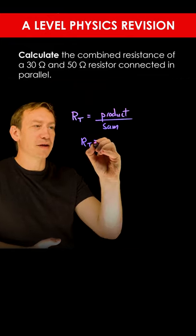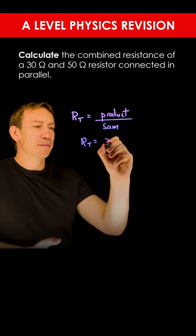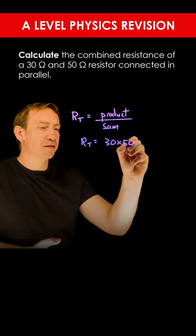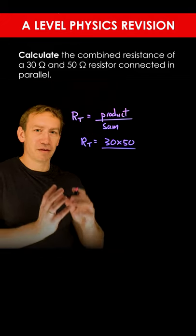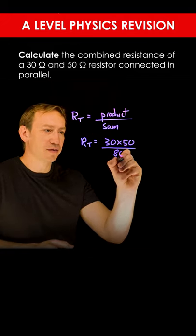And in this case the product of 30 times 50 is going to be equal to 1500, and that's divided by the sum which is 30 plus 50, which is 80.